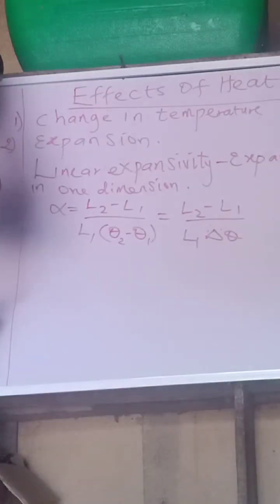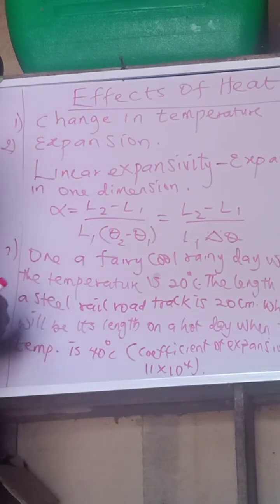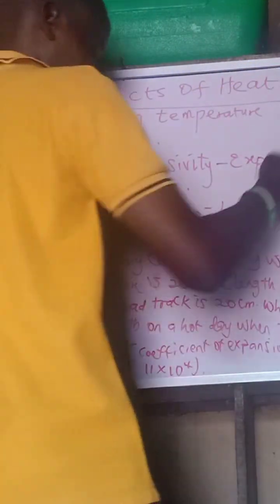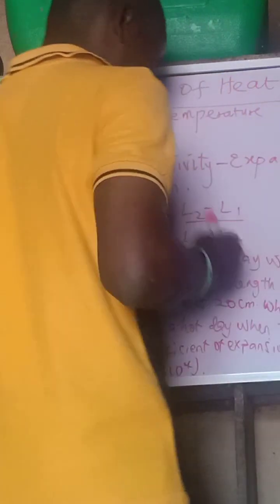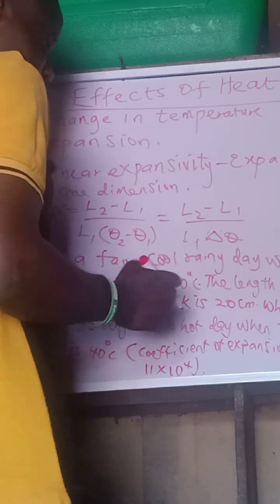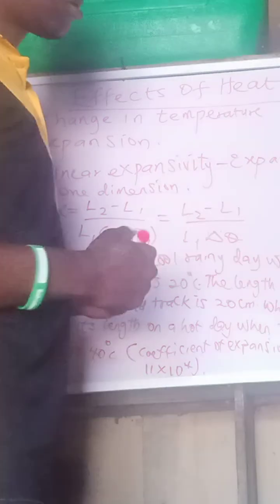Let's write the formula for actual linear expansivity. The initial temperature is 20 degrees Celsius, and then the final temperature is 40 degrees Celsius. The coefficient of expansion, alpha, is 11 times 10 to the power of negative 4. The length of a steel rod, the initial length, is 20 cm.